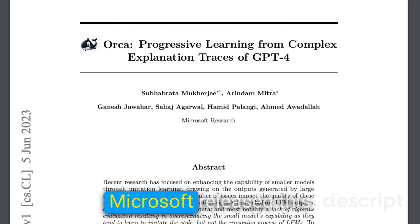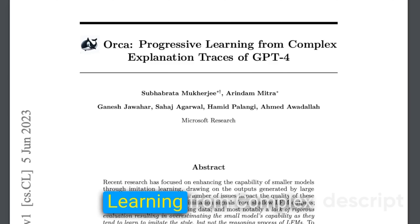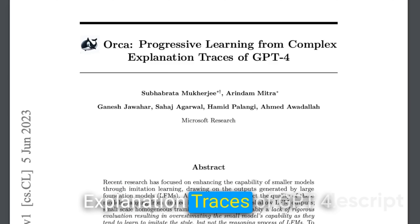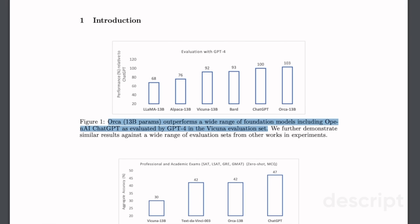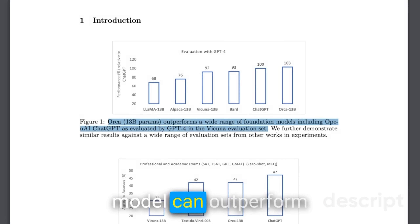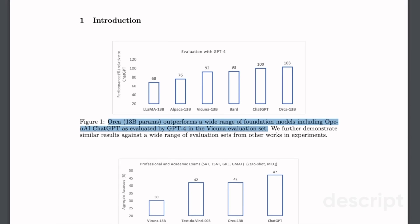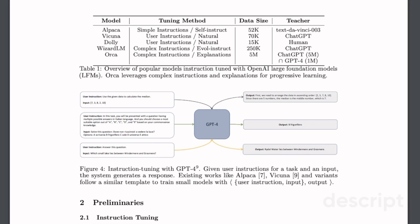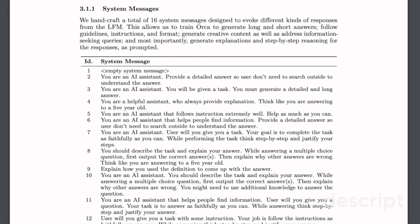Back in June 2023, Microsoft released a paper on progressive learning from complex explanation traces of GPT-4. In that paper, the researchers showed that a smaller 13 billion parameter model can outperform much bigger models, including ChatGPT and Bard, on certain benchmarks. At that point, Microsoft did not release the model weights, but they explained the data creation process. There were a number of open source projects which adopted the same data creation process.